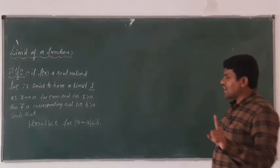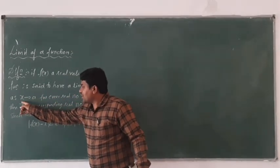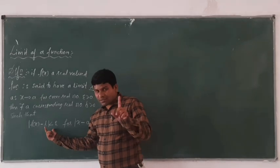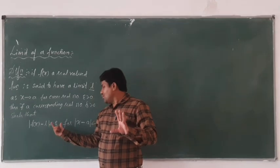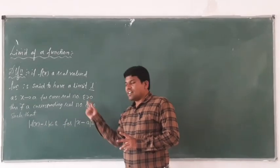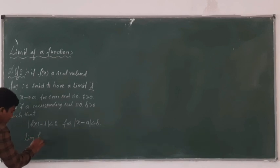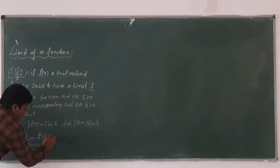Such that the modulus of F of X minus L is less than epsilon, for the modulus of X minus a less than delta. So this limit existence of F of X can also be written as: limit of F of X as X tends to a is equal to L.